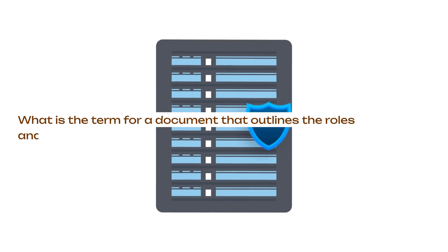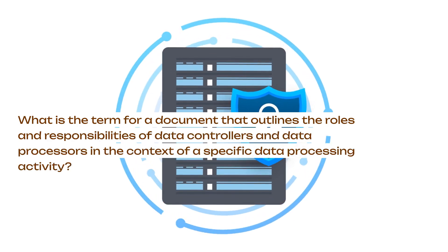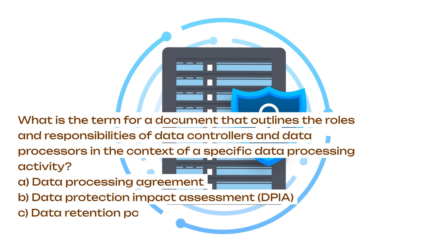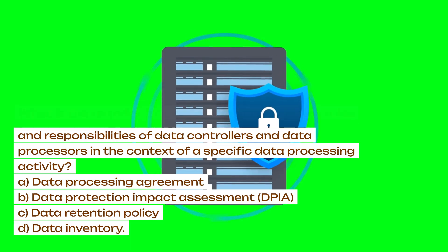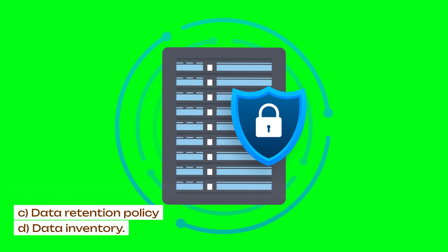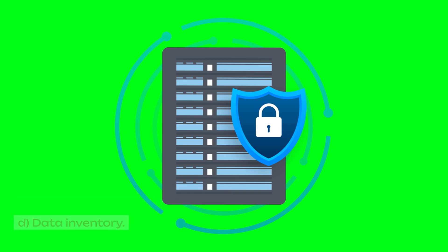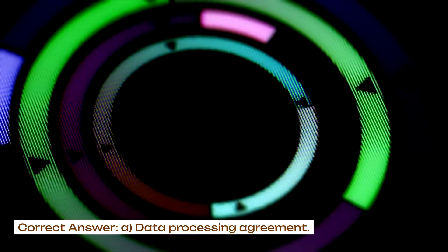What is the term for a document that outlines the roles and responsibilities of data controllers and data processors in the context of a specific data processing activity? A. Data processing agreement. B. Data Protection Impact Assessment (DPIA). C. Data retention policy. D. Data inventory. Correct answer: A. Data processing agreement.